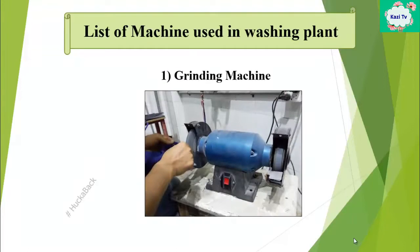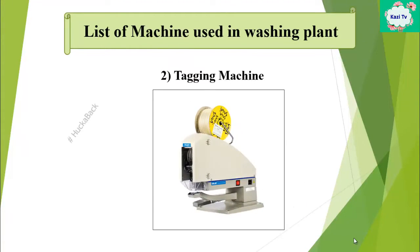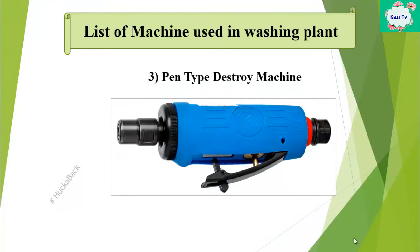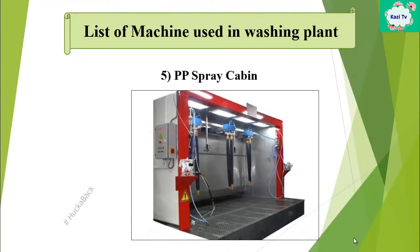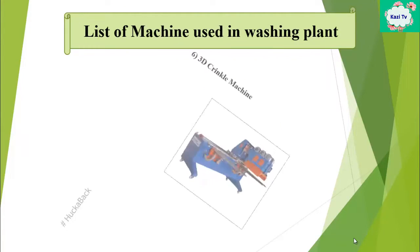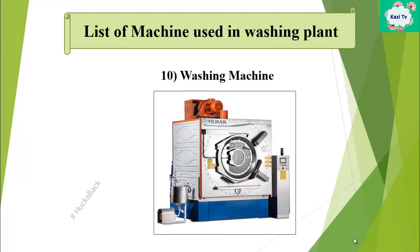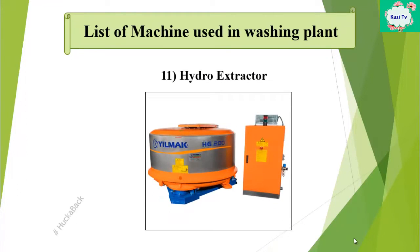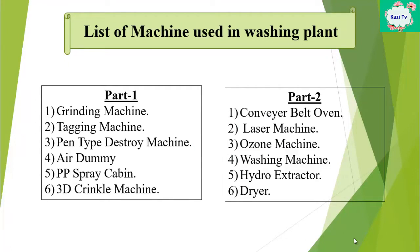The machines used in jeans washing plant are: grinding machine, tagging machine, pen type destroy machine, air dummy, PP spray cabin, 3D crinkle machine, conveyor belt, open laser machine, ozone machine, washing machine, hydro extractor, and dryer.